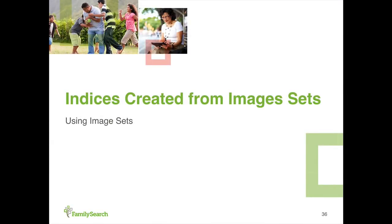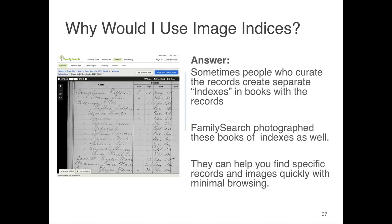That was the case where the images were in the image set created by the person who made the images. Let's look at a different set where the indexes are created from the image sets after the fact. Someone found the records at some point in the past and built an index in a separate book. When we go into an archive and look for documents, sometimes we find a separate book that contains information about one of the sets of images in that archive. People who curate the record often create these indices in separate books, and when we find that, we photograph those as well. Let's do a quick example of what it looks like to use an image index that is found in a separate volume or a separate set of images.